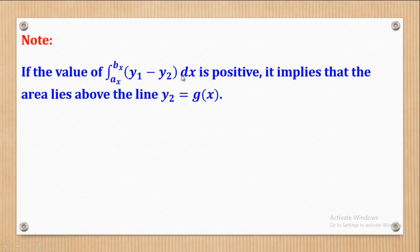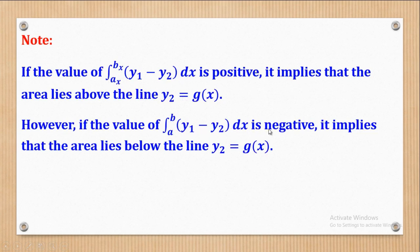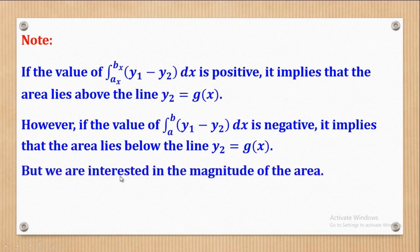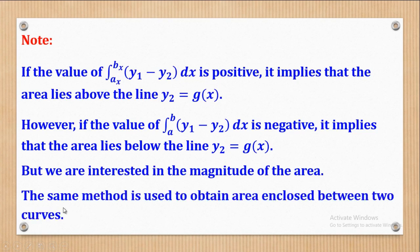If the area is positive, the area lies above the line y2 equal to g(x). On the other hand, if it is negative, the area lies below the line y2 equal to g(x). But remember, we are interested in the magnitude of the area. The same method is also used to obtain the area enclosed between two curves.